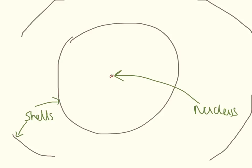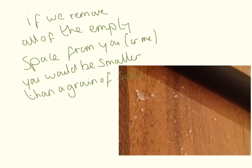The majority of an atom is empty space. If we removed all of the empty space from you or me, you would be smaller than a grain of salt. The electrons and shells take up so much space in us, but all of the mass is in the protons and neutrons. If we squashed all your protons and neutrons together, removing the empty space, you would be absolutely tiny.